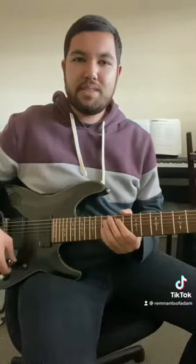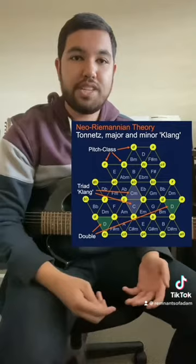19th century musicologist Hugo Riemann studied the relationships between different triads directly through the use of triadic transformation. Triadic transformation is a very long topic, which if anyone's interested, I'd love to discuss in another video. Years later, several music theorists would put together a chart known as a tonnetz chart, which gives a nice visual representation of what exactly Riemann was studying.